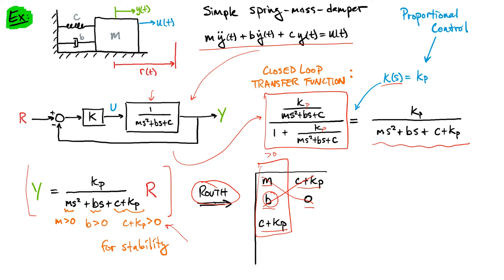So what you'll see is simply because this is proportional control in a second-order system, the Routh table and these necessary conditions always align. But for more complicated examples, you could use this to refine the values and constraints on our different parameters. In this case, c + Kp has to be greater than zero, which tells us that Kp has to be greater than -c if we want this system to be stable.